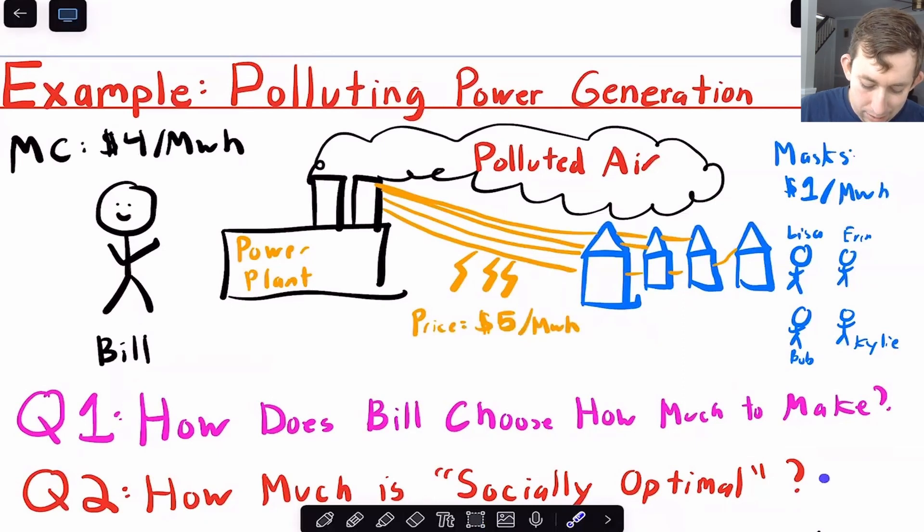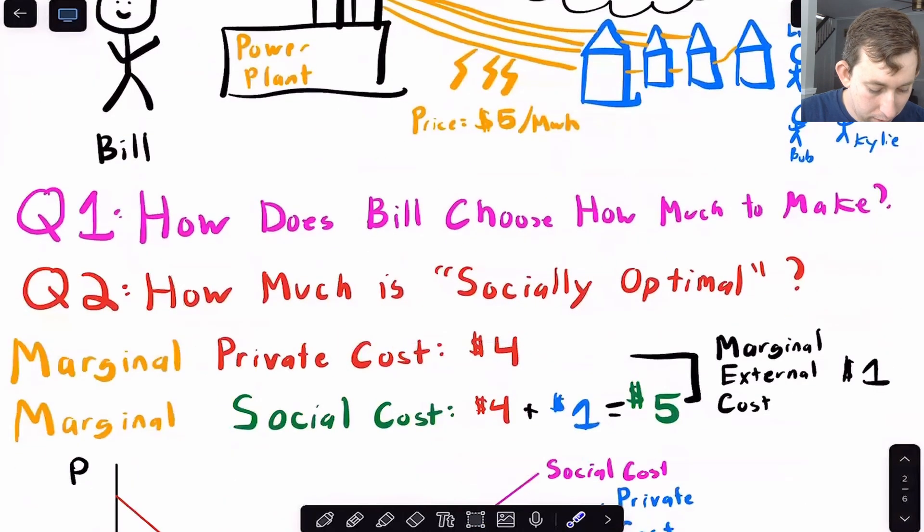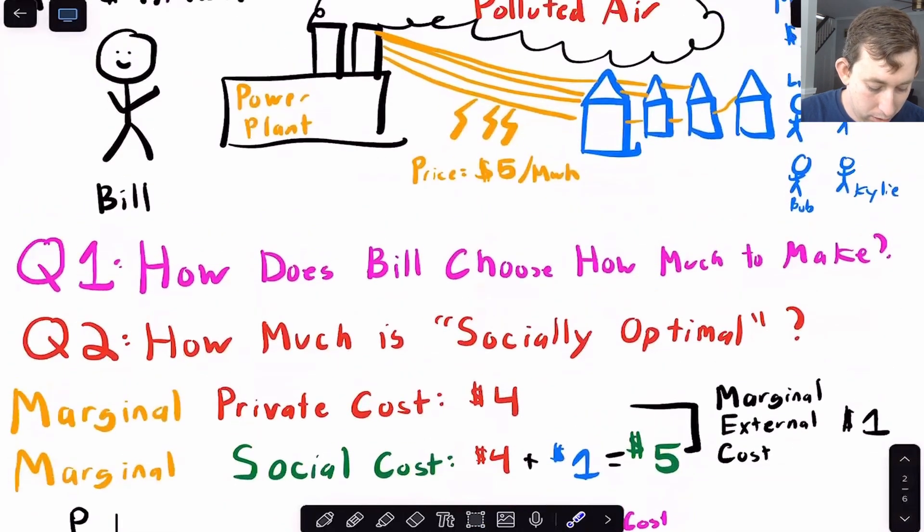how much electricity do you think it's socially optimal to generate? And by socially optimal, I mean we're maximizing both Bill's welfare and the people's welfare. And we're trying to take into account that the people have this pollution they have to deal with that's a real cost to their lives.